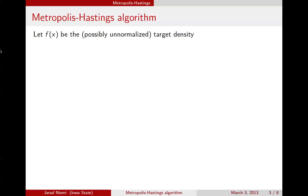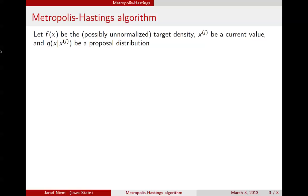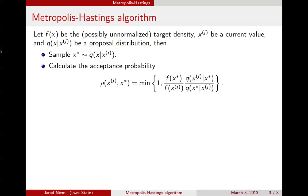We'll introduce the Metropolis-Hastings algorithm. f(x) is our target density, and this could be unnormalized. We assume that we have a current value x_j, and we have a proposal distribution that may depend on our current value x_j. The first step is to sample a proposed value x* from our proposal distribution that may depend on the current value x_j.